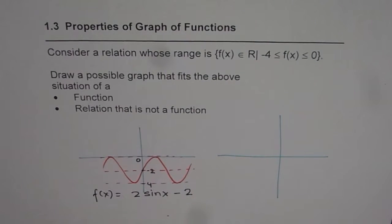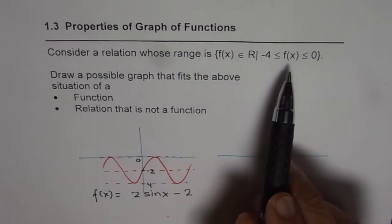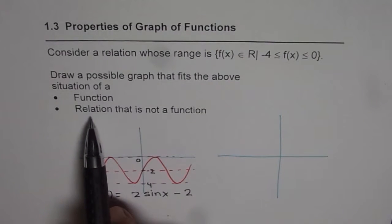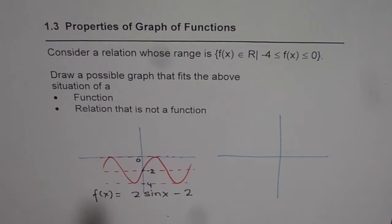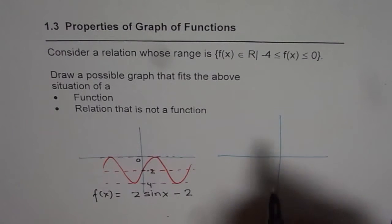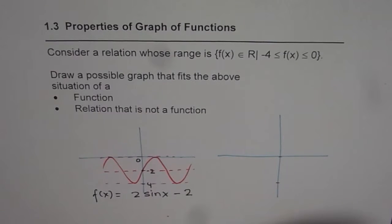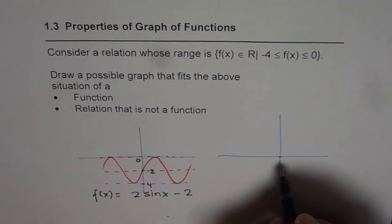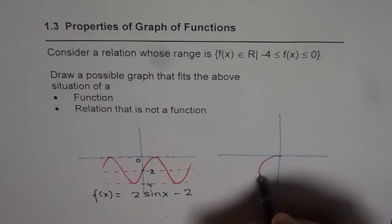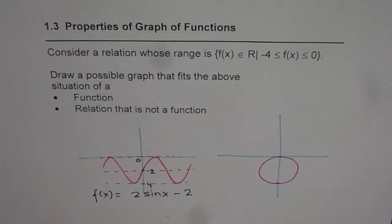So that gives the equation of a function which fits into the given requirement. Now we need to find a relation that is not a function where again maximum value is restricted and minimum value is restricted. Now maximum minimum value is restricted. So circle is a relation which fits into our description.